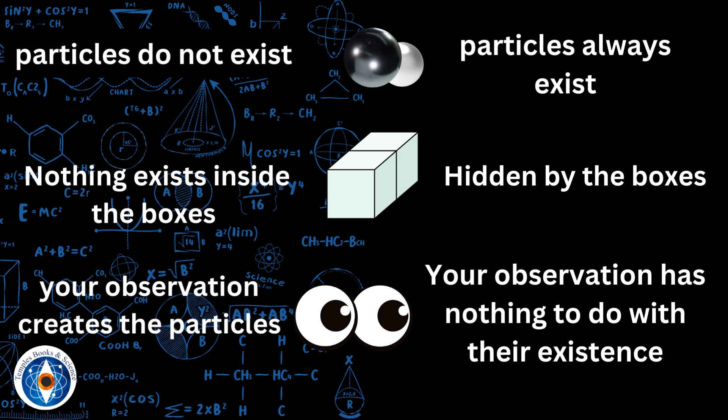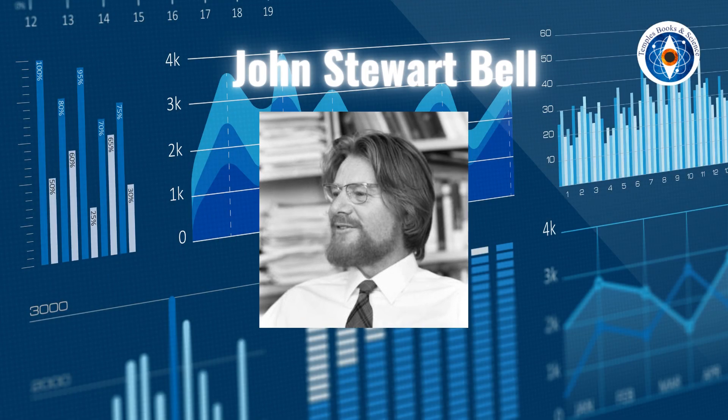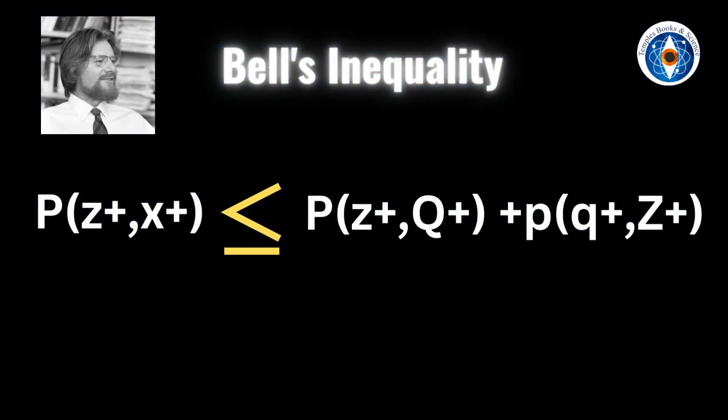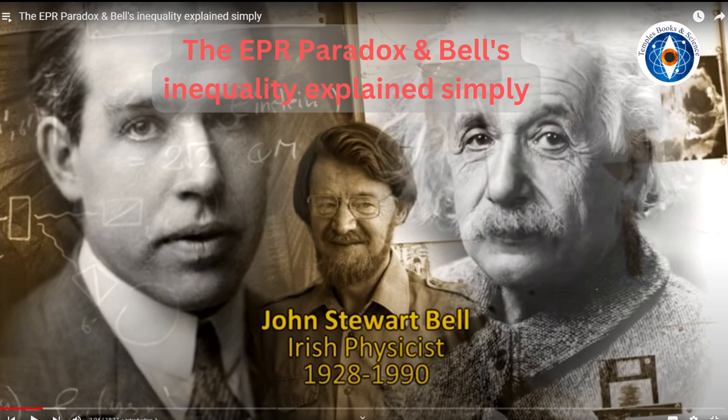Again, there was a deadlock situation. Then another brilliant scientist called John Stuart Bell came up with an ingenious solution to settle this argument. He said it is possible to prove which theory is correct using statistics. He came up with a famous theorem called Bell's inequality, which looks like this. I have provided a link to another video that gives a detailed explanation for this theorem in the description below. Here is a very simplistic explanation.